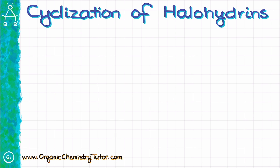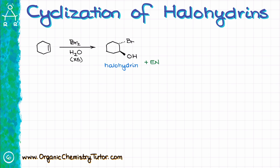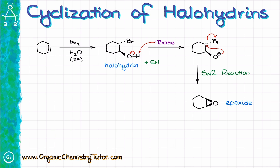Moving on to the next common epoxidation technique, we can cause an intramolecular SN2 reaction in vicinal halohydrins. For instance, if I took cyclohexene and treated it first with bromine in excess water, I would end up with the corresponding halohydrin. Then, if I took this molecule and reacted it with a base strong enough to deprotonate the OH — maybe hydroxide, an amide, H⁻, or something like that — I'm going to end up with the alkoxide, and that alkoxide is going to undergo the intramolecular SN2 reaction, essentially closing the epoxide ring. I also have a dedicated video on halohydrin formation via the hydroxyhalogenation reaction of alkenes.